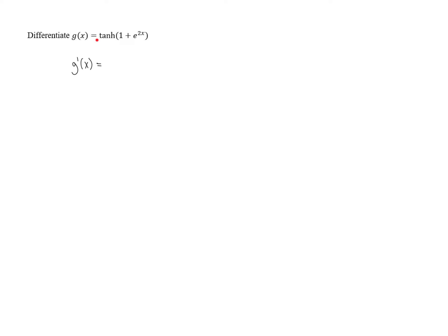The outer function is hyperbolic tangent of u, and we know the derivative of hyperbolic tangent is hyperbolic secant squared of u. So we've got hyperbolic secant squared of the quantity 1 plus e to the 2x.